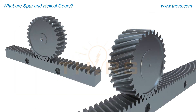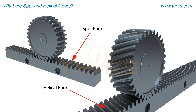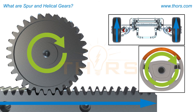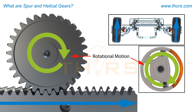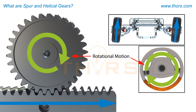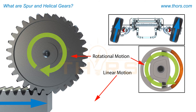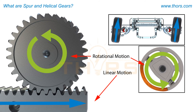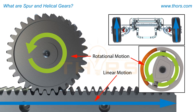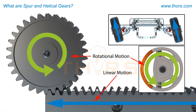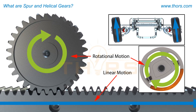The last type of spur and helical gearing are racks, which are spur or helical gears laid out on a straight line. Racks are used to change rotational motion of the gear or pinion to translational or linear motion. There is no rotation of the rack — it simply moves in a straight line at right angles to the axis of rotation of the drive gear or pinion.